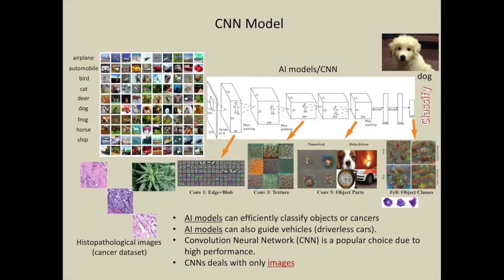In a CNN model, the input is an image which can be of airplanes, dogs, histopathological images, or marijuana plants. These images are processed through various convolution layers which produce a convolved image or an abstract form of image.